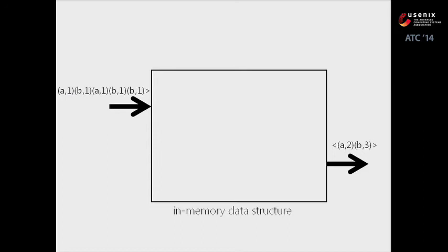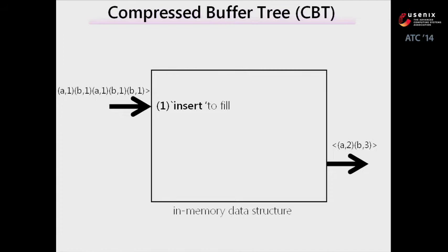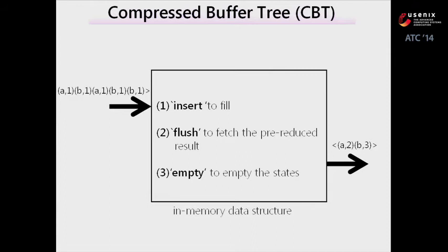What does the Compiler Buffer Tree look like? It is something like a hash table, but the difference is that it holds historical key-value pairs and compresses them in memory, giving more memory efficiency and high throughput when flushing. The CBT gives three APIs to the programmer. Flush means give me the current results. Empty means clear all history results—useful for batch processing where input needs to refresh every batch. Since the CBT is distributed across all web servers, we need a way to synchronize execution and aggregate intermediate key-value pairs.